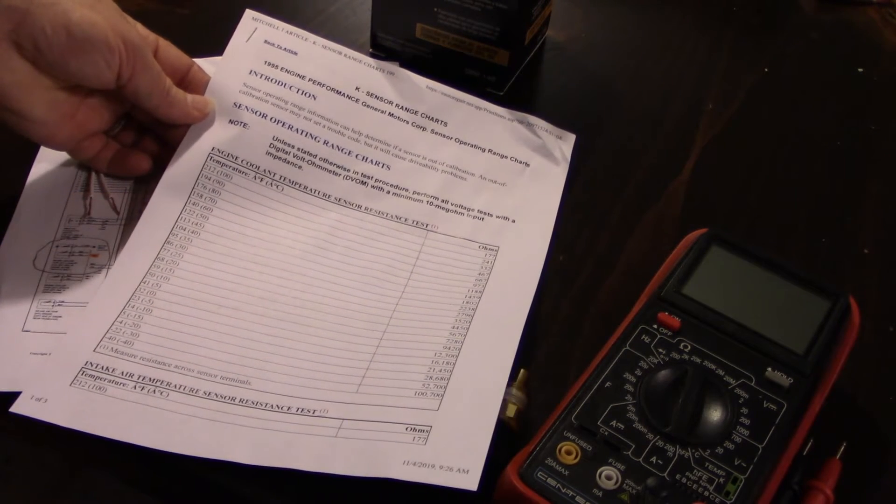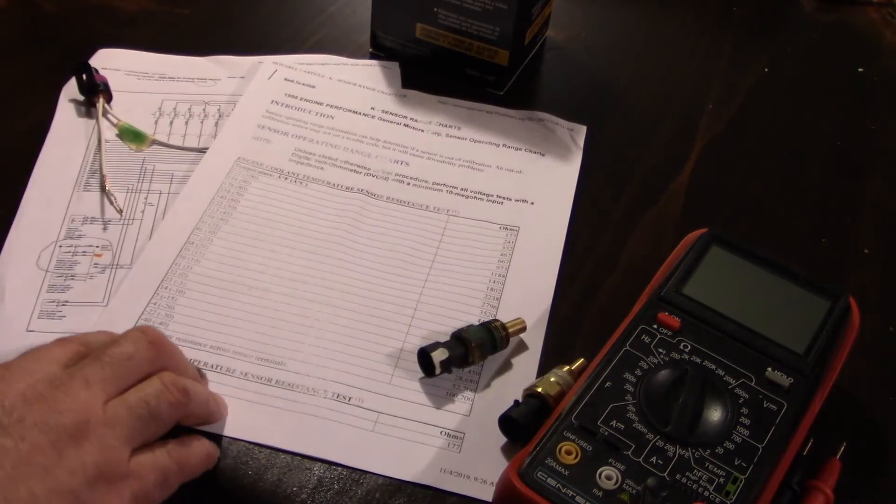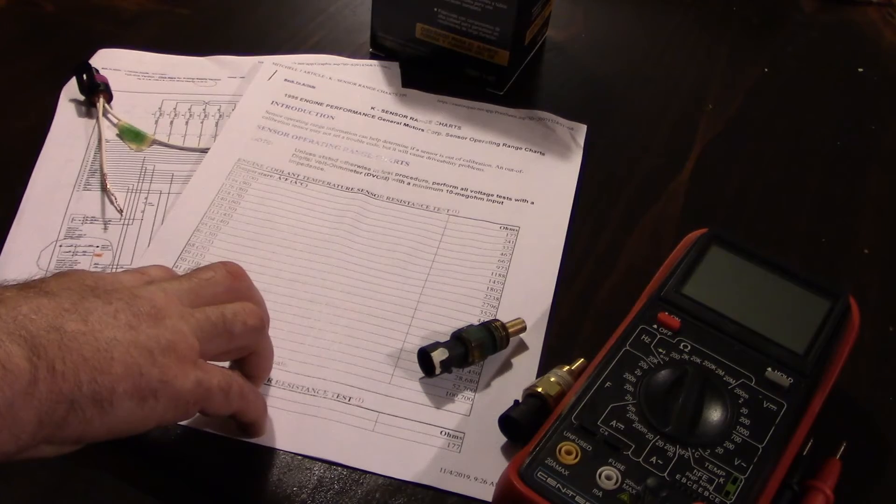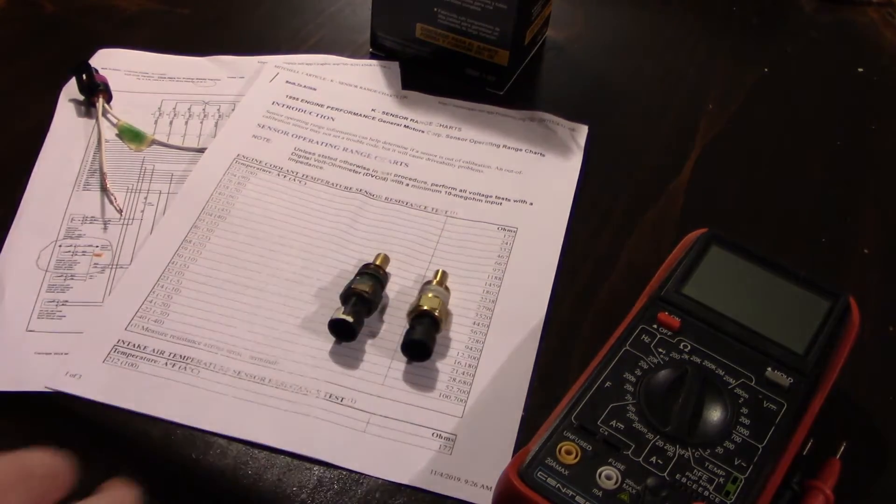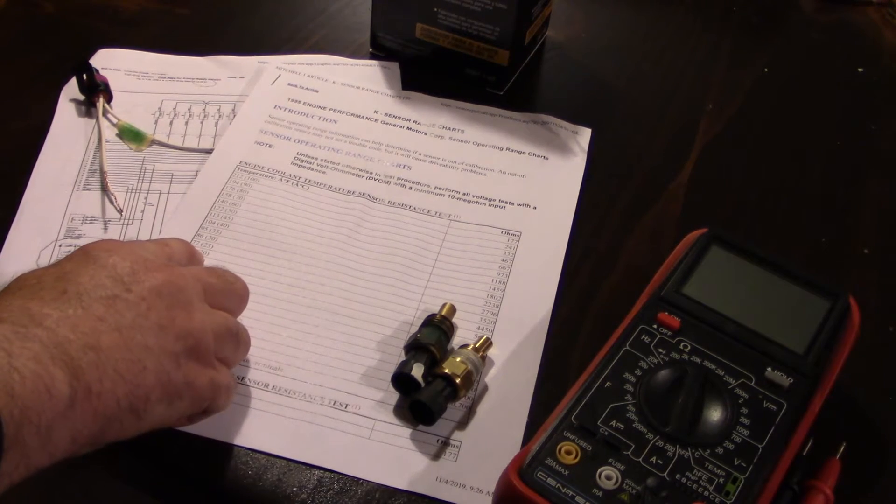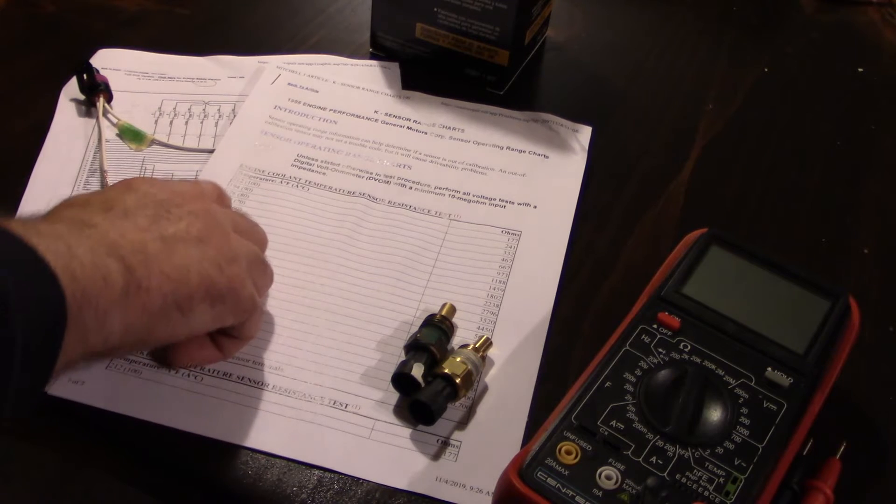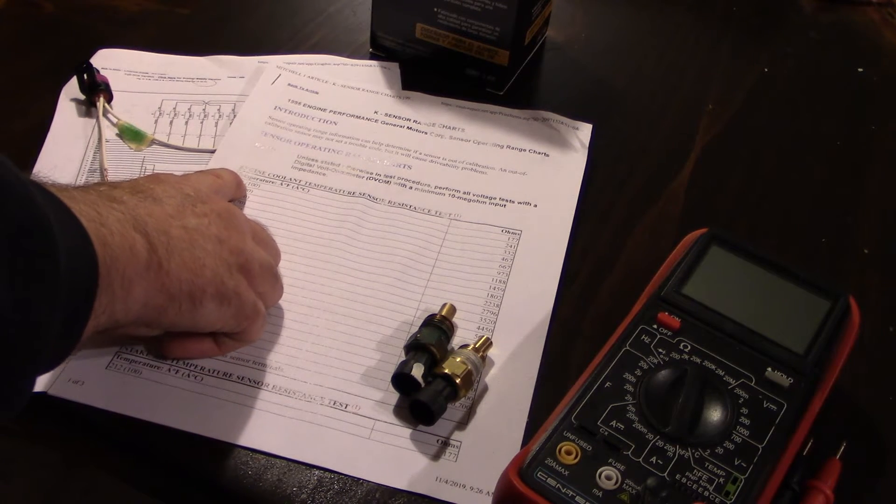What I want to do is take three different readings. I want to take readings at 32 degrees freezing—we'll do that by putting these in ice water, then at room temperature about 68 degrees or so, and then we're going to put them in boiling water and take readings here at 212 degrees.